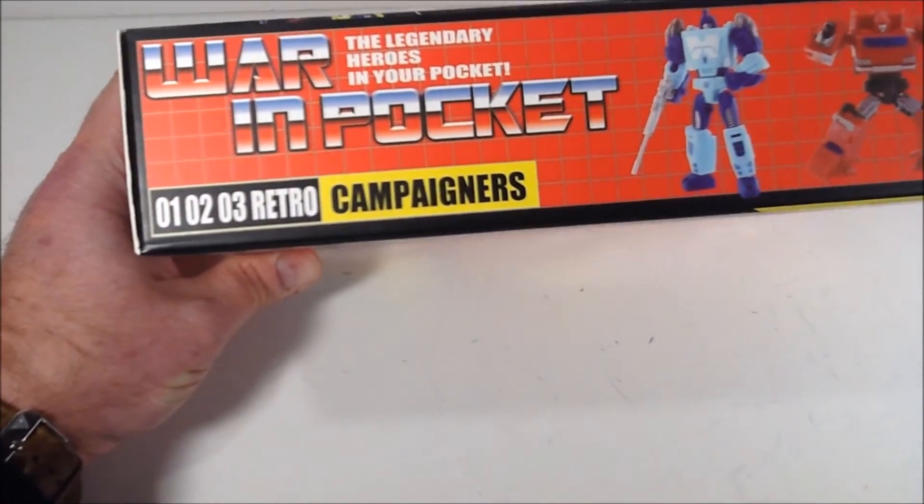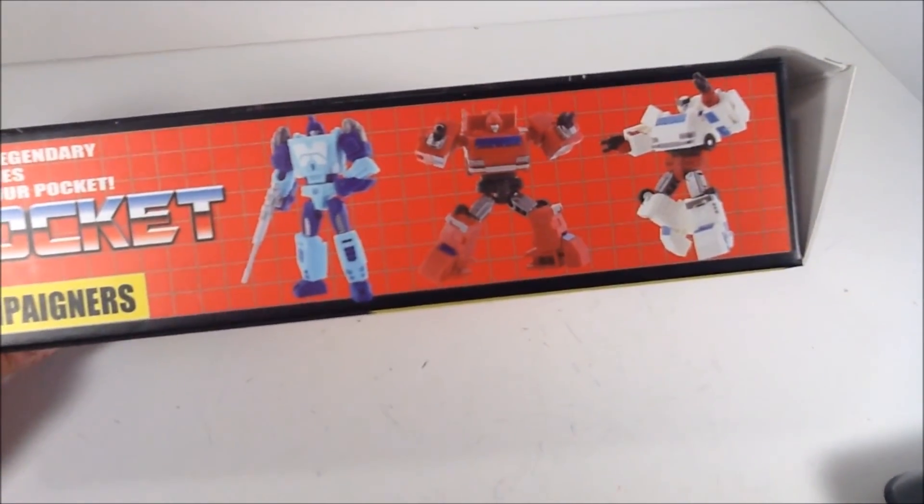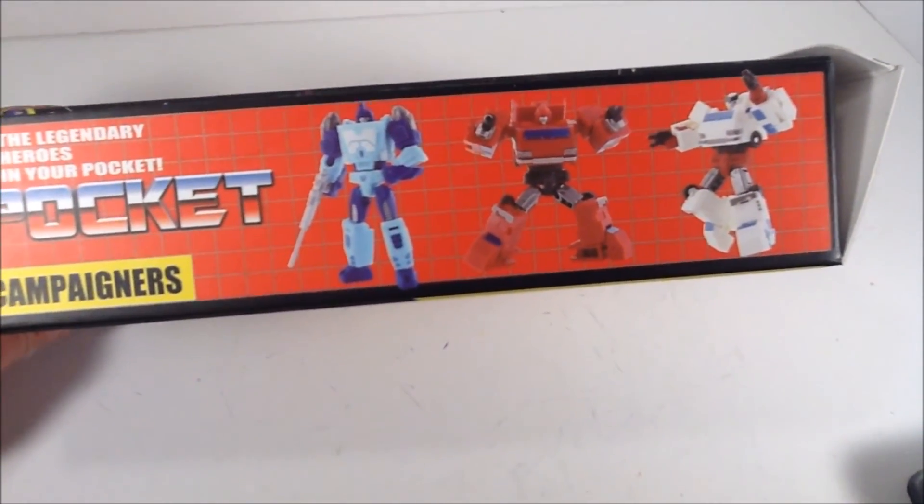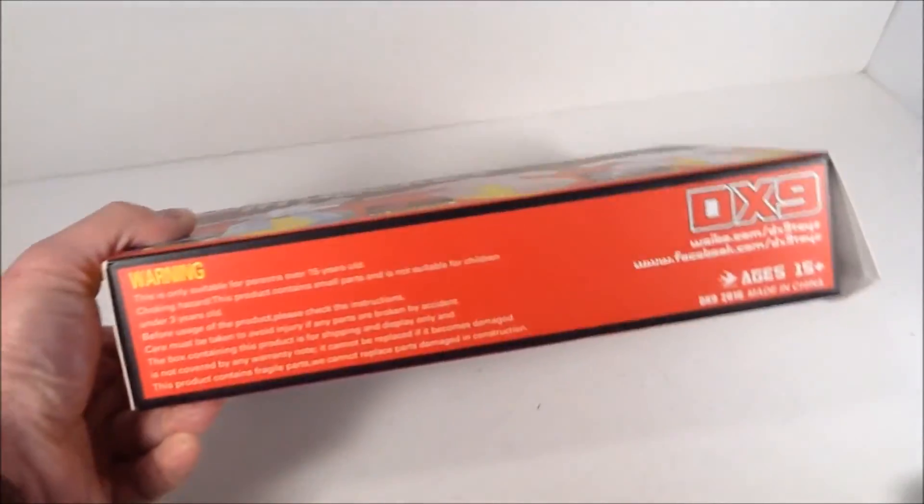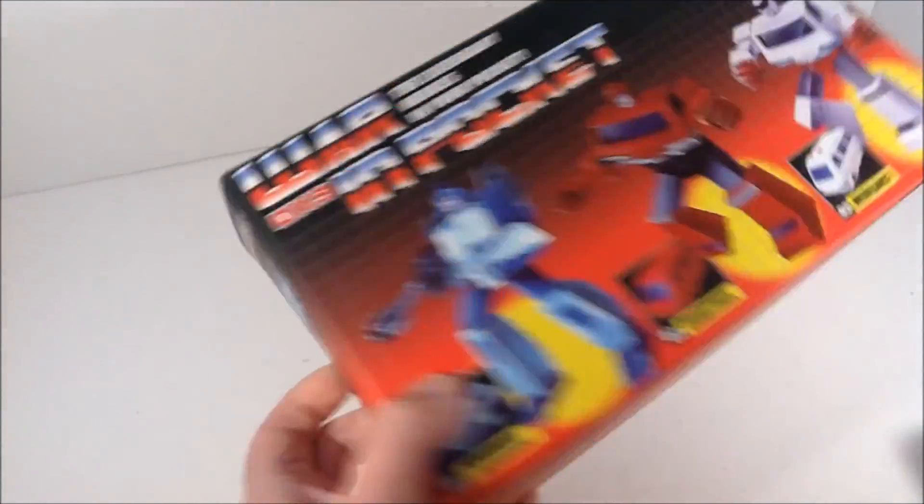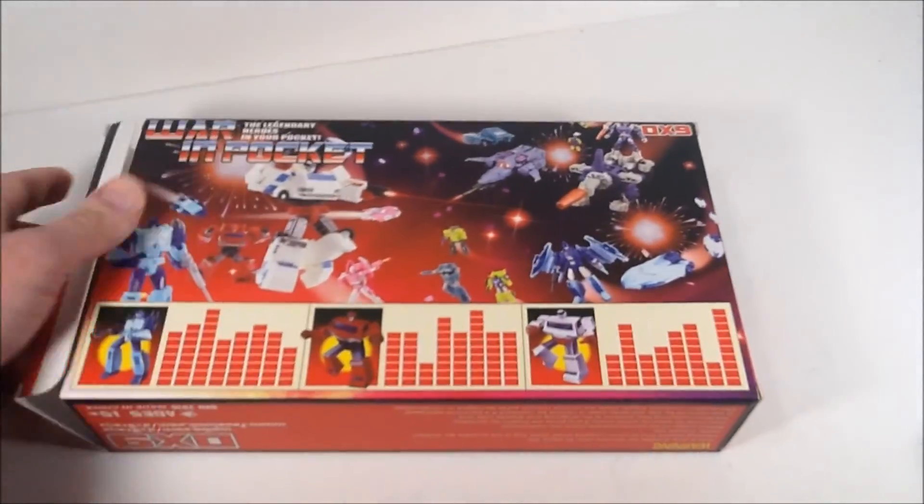Hello everyone, this is Tom, and today we will be taking a look at the DX9 War in Pocket Return of Justice Force, what do they call these things? The Campaigners. And this is the three-pack that has the Blur, Ironhide, and the Ratchet. Here's the box.